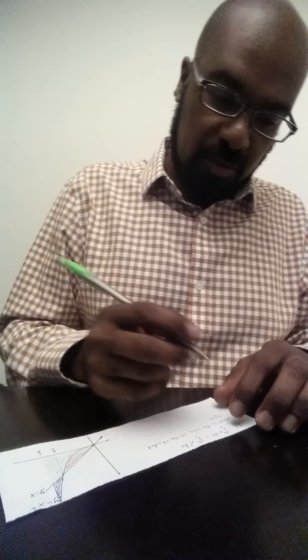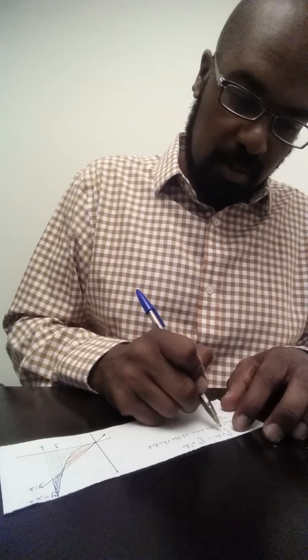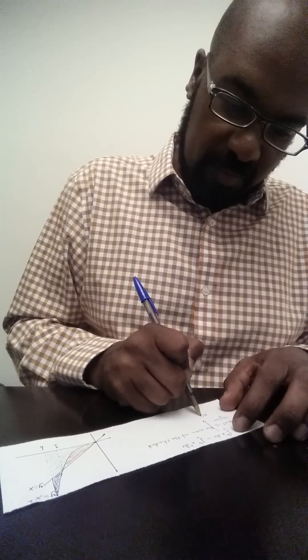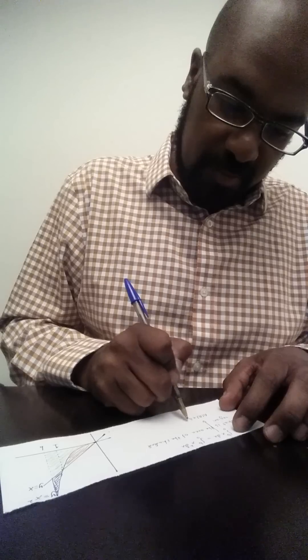So this first integral here is the area of the red plus the area of the green.